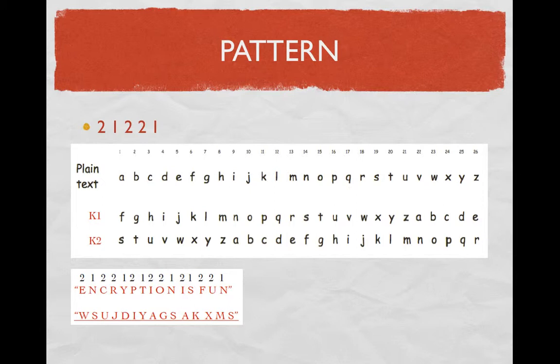In this case, I'll choose a random pattern of 2, 1, 2, 2, 1. It could easily be 1, 2, 1, 1, 2, 1, 2, 1, 2, 2, 2, 1, 1 — it could be as long or short as you want. Now what you do with this pattern is simple.